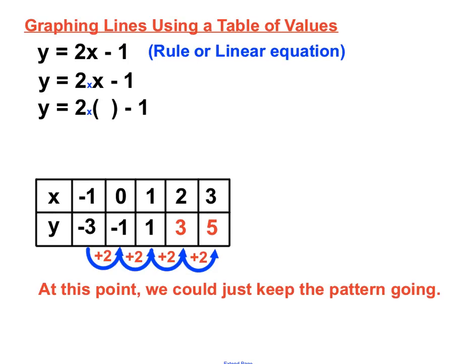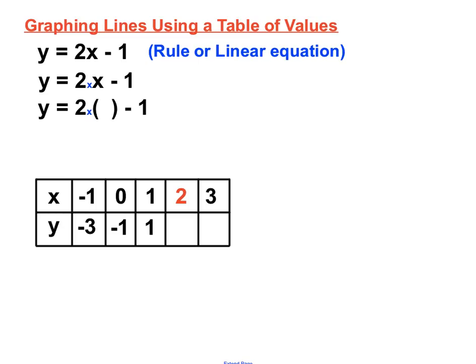That's a possibility, or we can just keep subbing in our y values into the rule. We'll double check both ways. If 2 gets subbed in there, 2 times 2 is 4, takeaway 1 is 3. That's what we got by following the pattern. If we sub in 3 as our final x value, 2 times 3 is 6, takeaway 1 is 5. We've completed our table of values. You can keep the pattern going if you're confident, or just keep subbing in each x value and getting a y value for it.